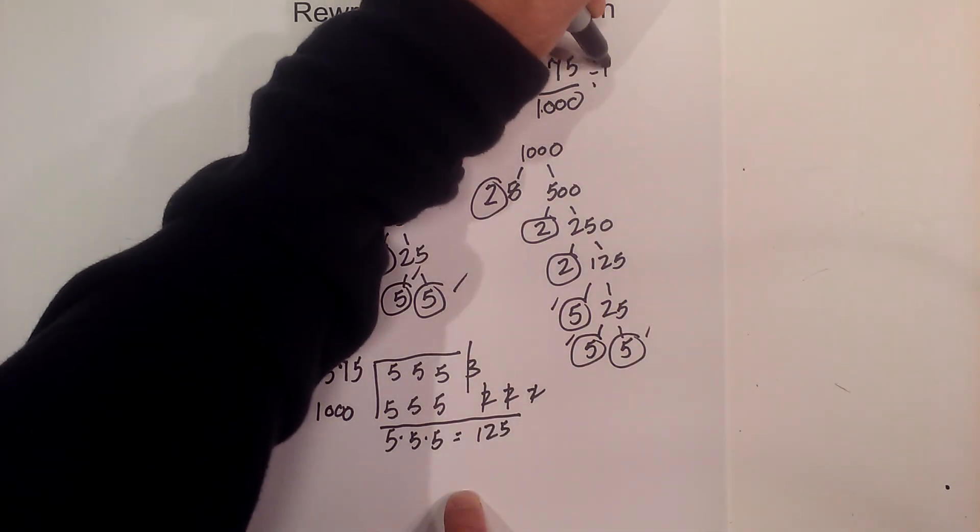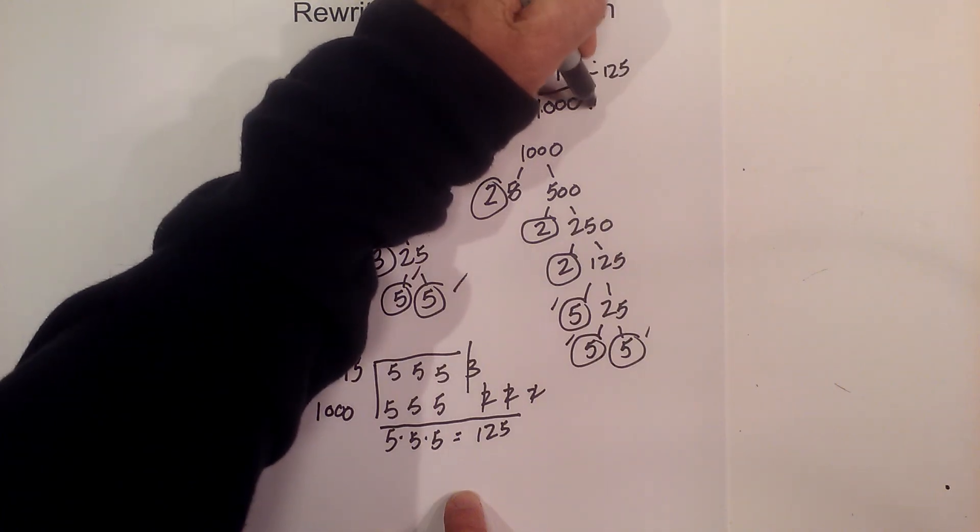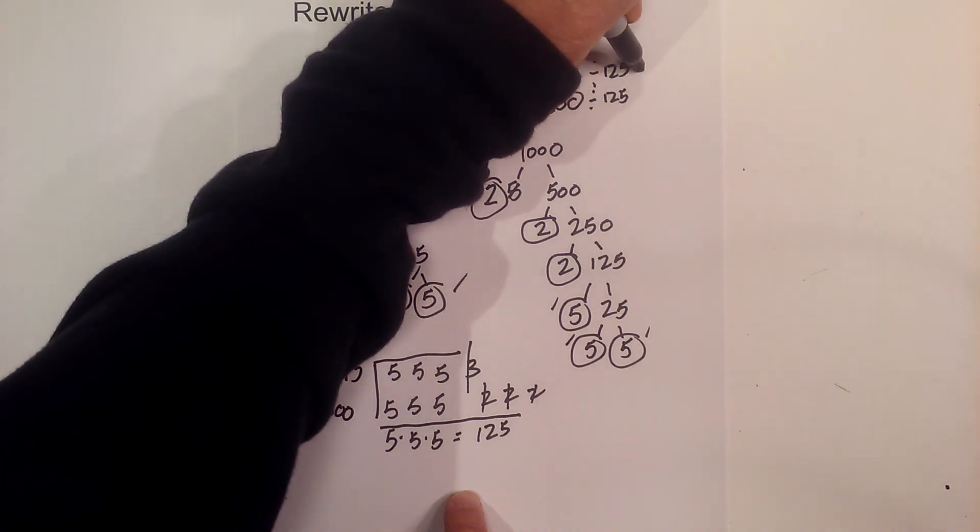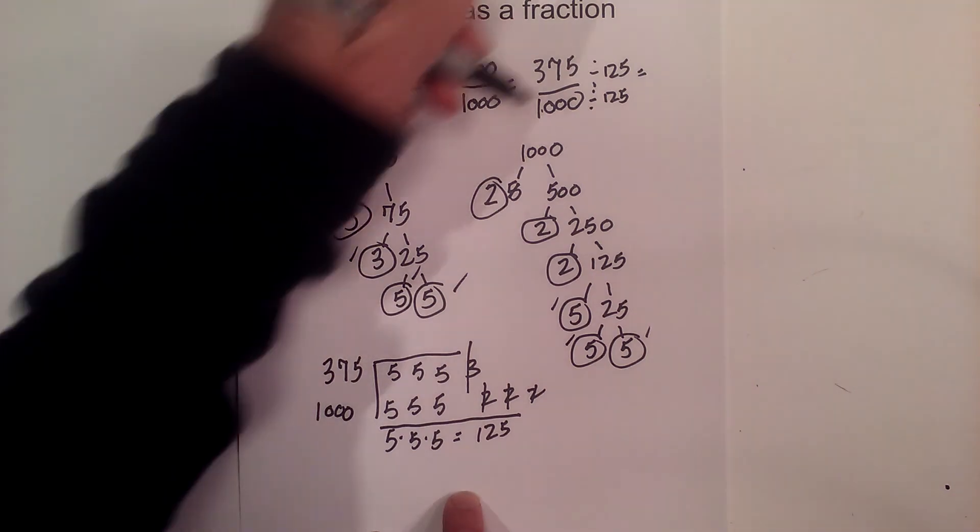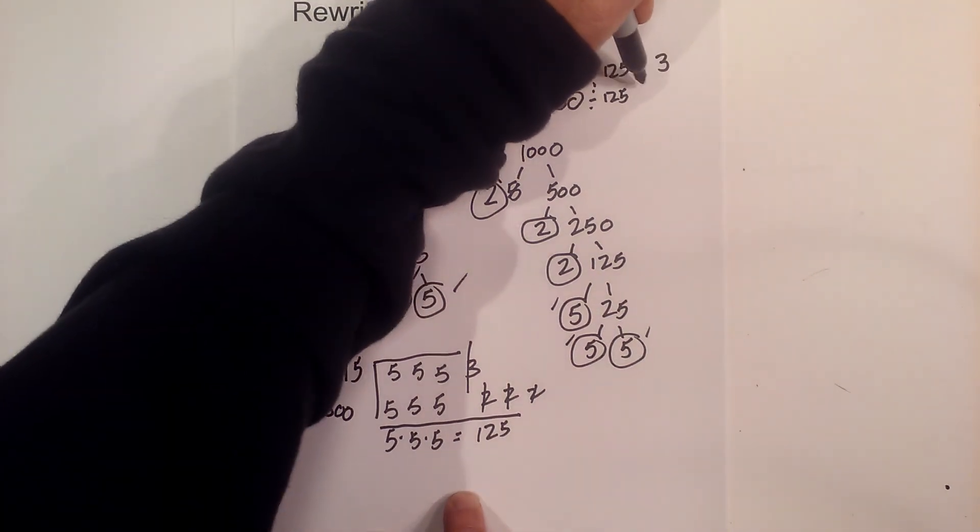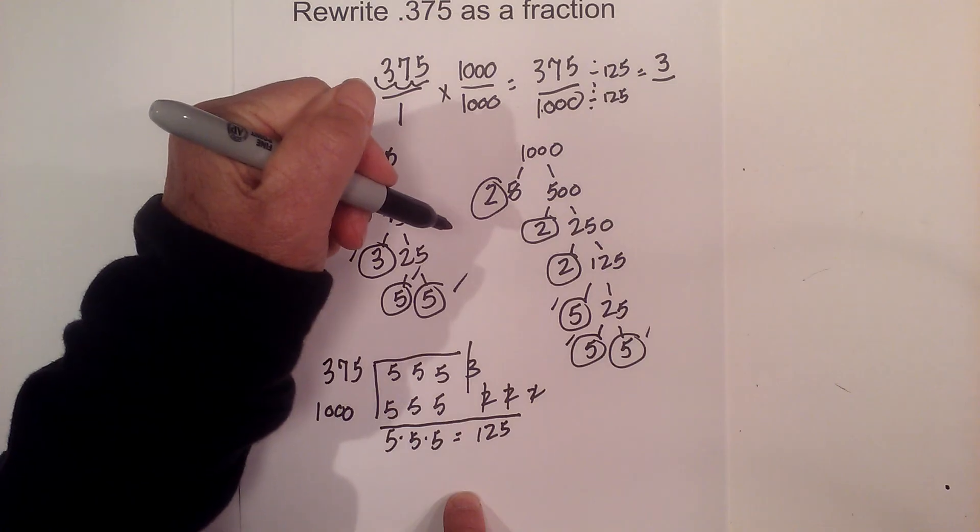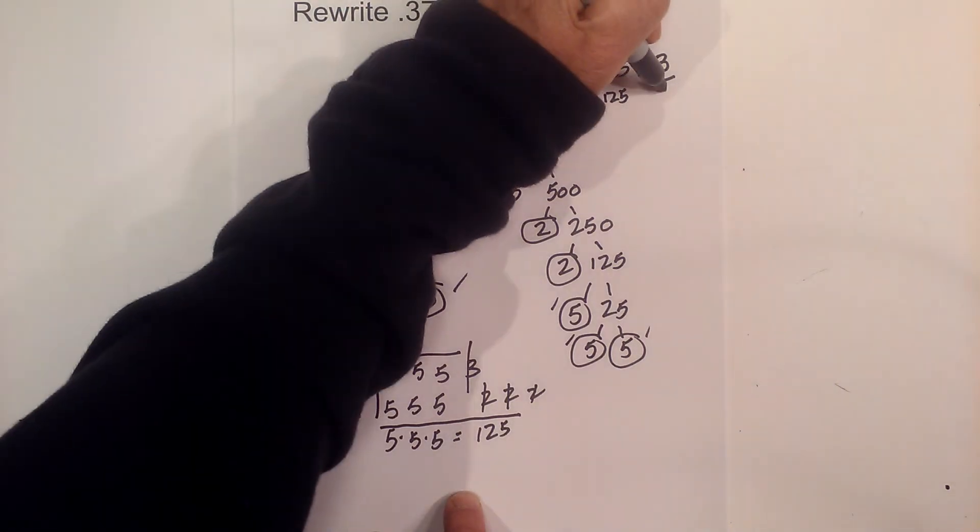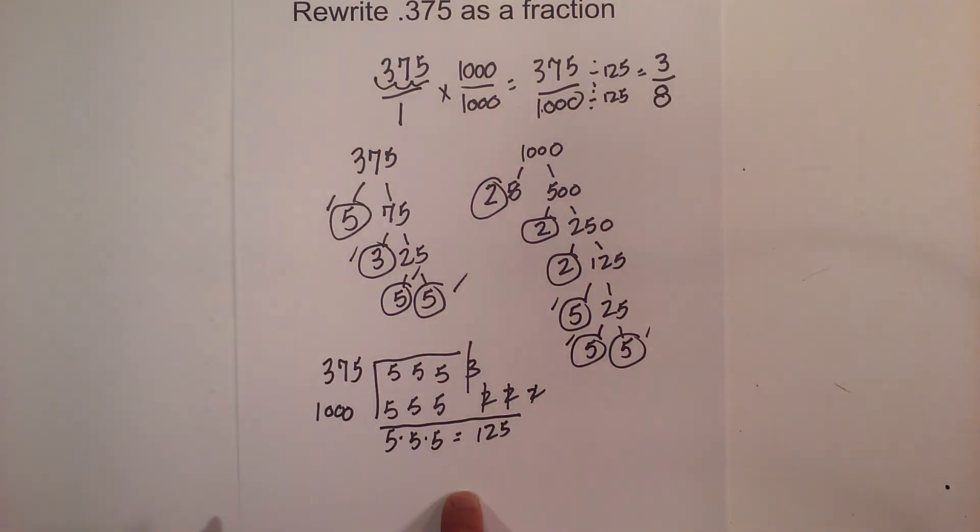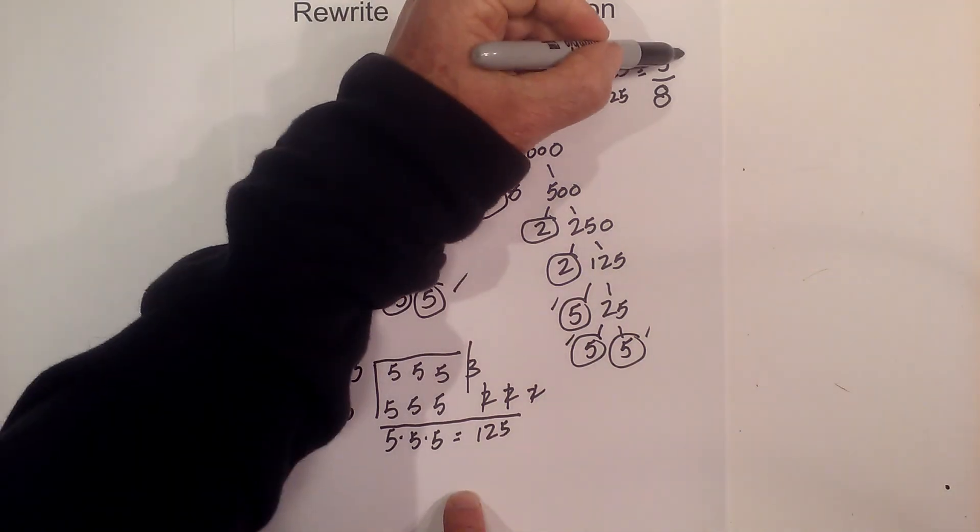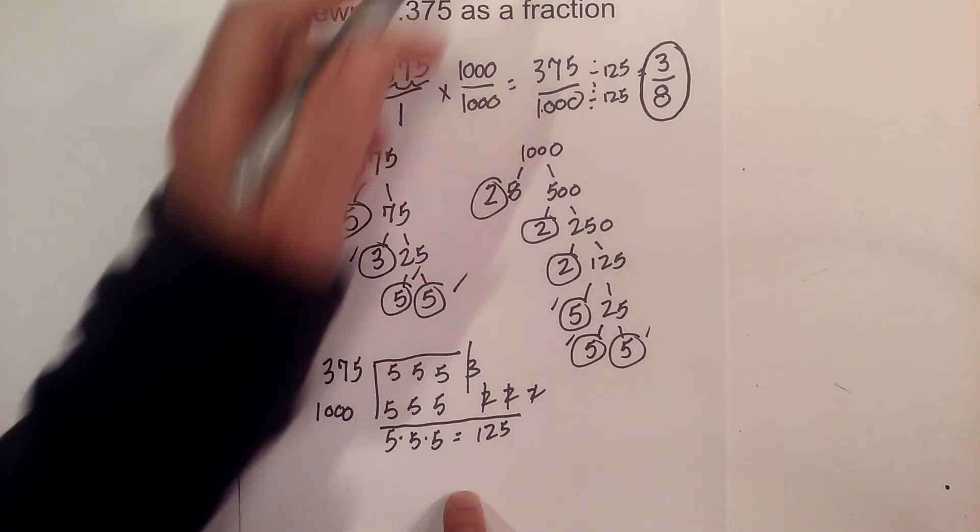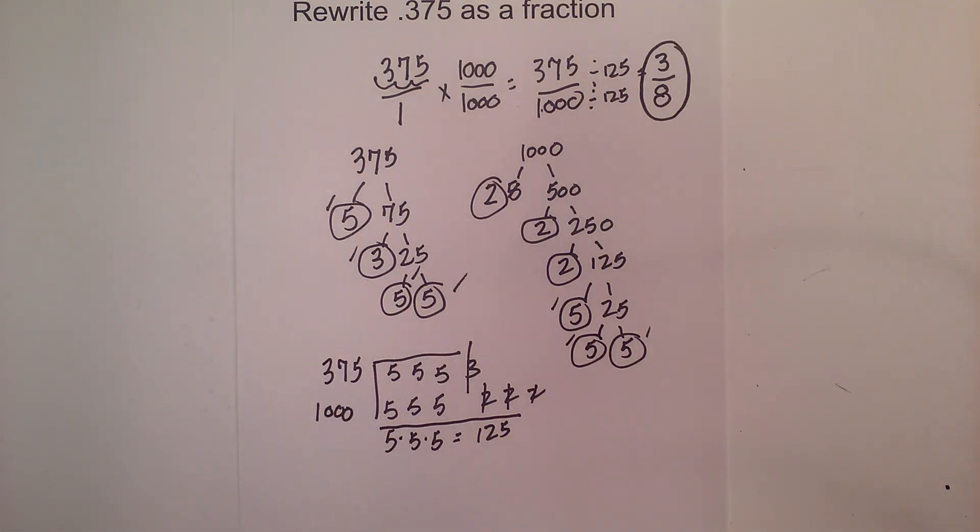Now I just divide both of these by 125. And I know that 375 divided by 125 equals 3. And 125 goes into 1000 8 times. So there we are. We got to it. 0.375 rewritten as a fraction is 3 eighths. I hope that helps.